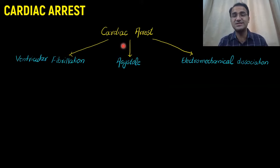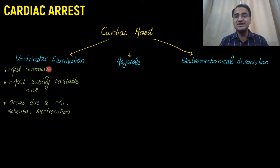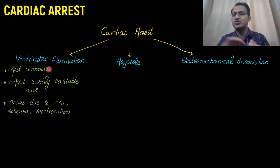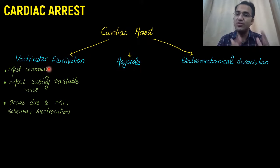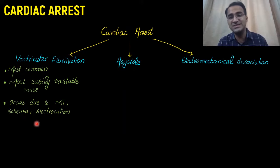What are the causes of cardiac arrest? Cardiac arrest can be due to ventricular fibrillation, asystole, or electromechanical dissociation. In ventricular fibrillation, there is abnormal electrical activity in the ventricles that prevents them from contracting properly and pushing blood out to the body, so pulses are absent. Without blood supply to the brain, the person becomes unconscious and breathing stops. It is the most common and most easily treatable cause, and can occur due to MI, ischemia, or electrocution.